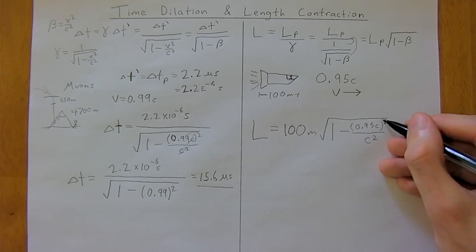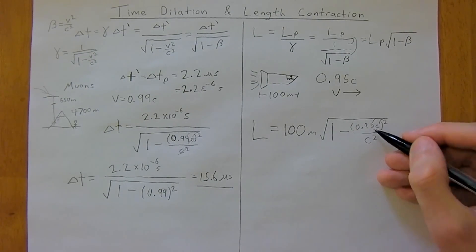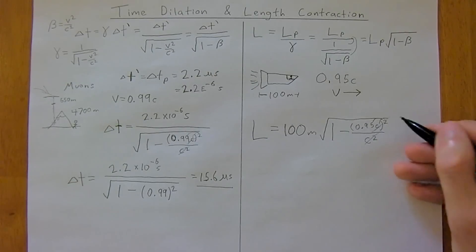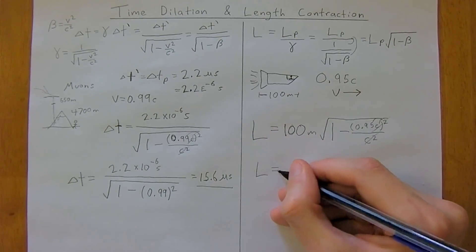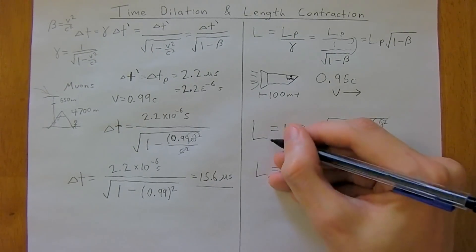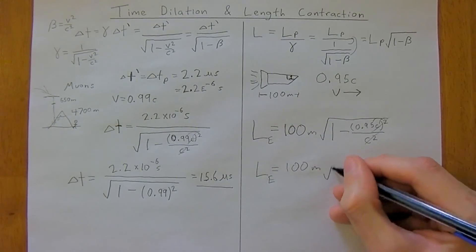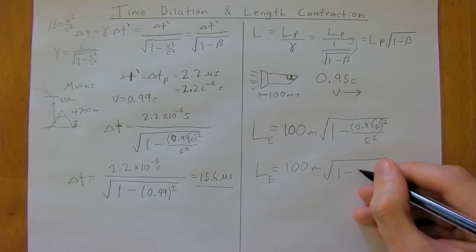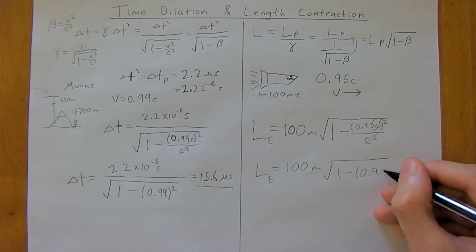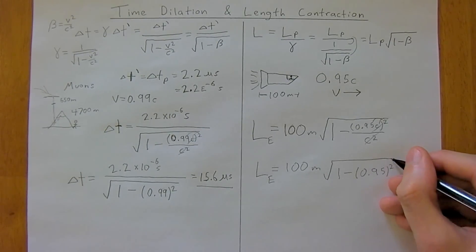and so, you know, multiply, so c squared, and we're going to get 0.95 squared, so these c's are going to cancel. And so, our length, as viewed by Earth, will be 100 meters, times the square root of 1 minus 0.95 squared,